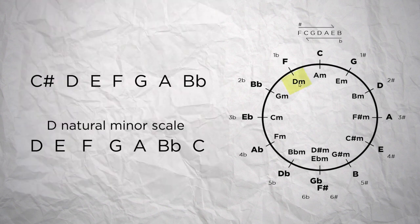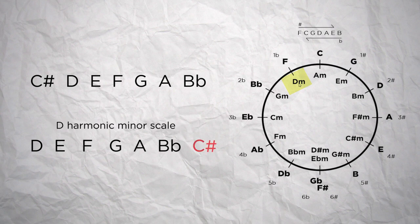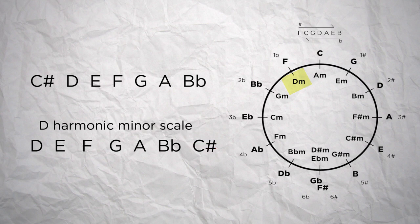And in the D natural minor scale, the 7th note C can be raised by a semitone, so the scale becomes the D harmonic minor scale. So the D harmonic minor scale is the scale we were looking for, which means our tonality is D minor.